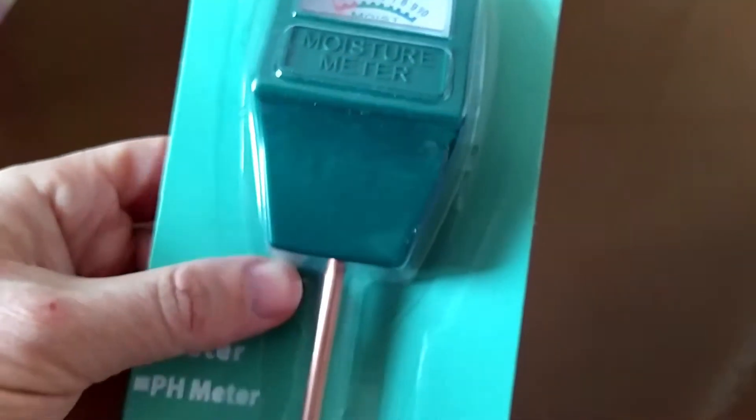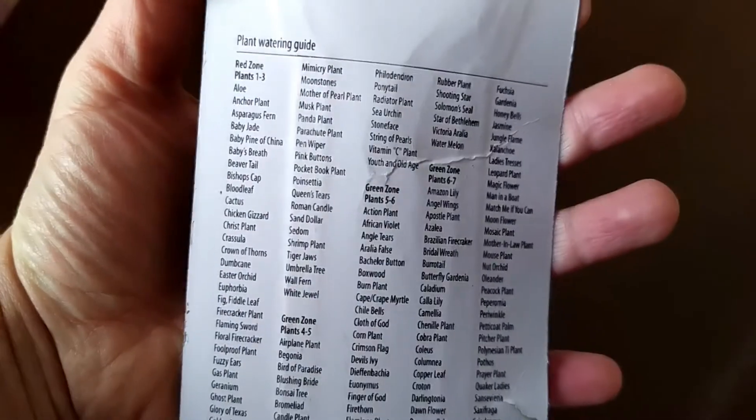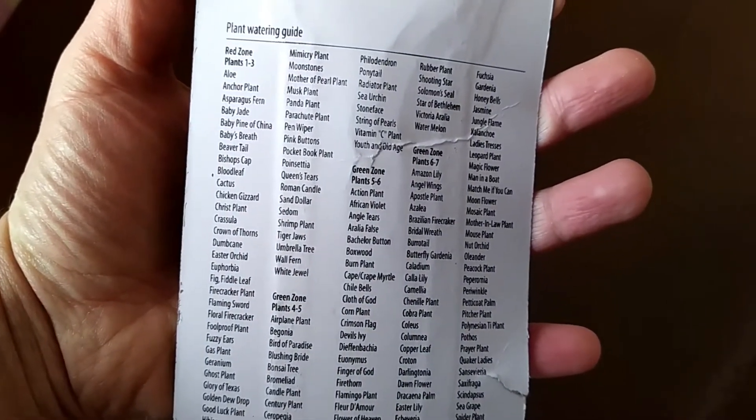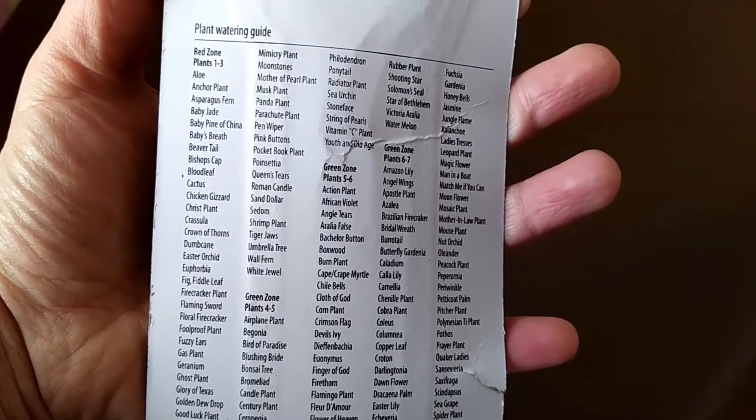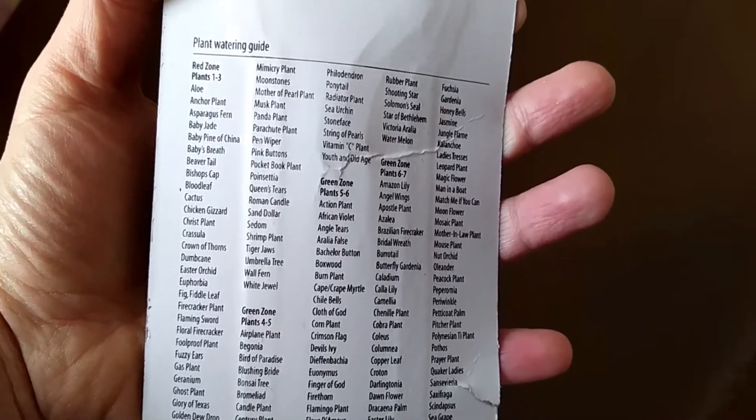And here are its recommendations for each plant. It gives the zones like red zone plants one, two, three - those kinds of plants need less water at that time.